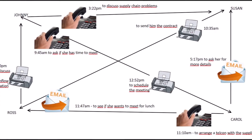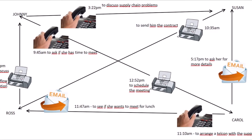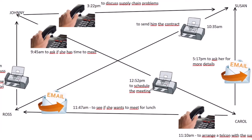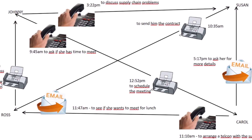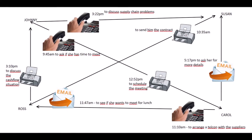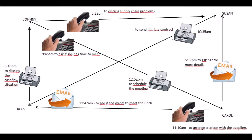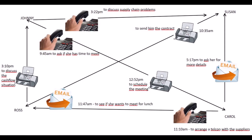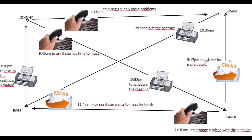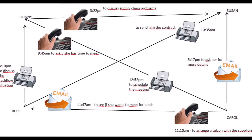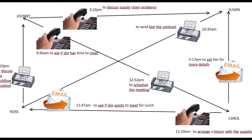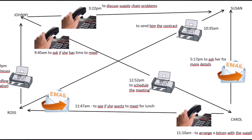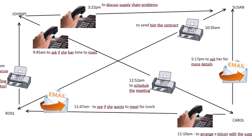When did Johnny ring Carol? The answer is 9.45 — quarter to ten. And the reason for the call: why did Johnny ring Carol? The answer is he rang her to ask her if she has time to meet. You need to put 'did' to make sure that it's not a subject question, and then the rest should be relatively easy.